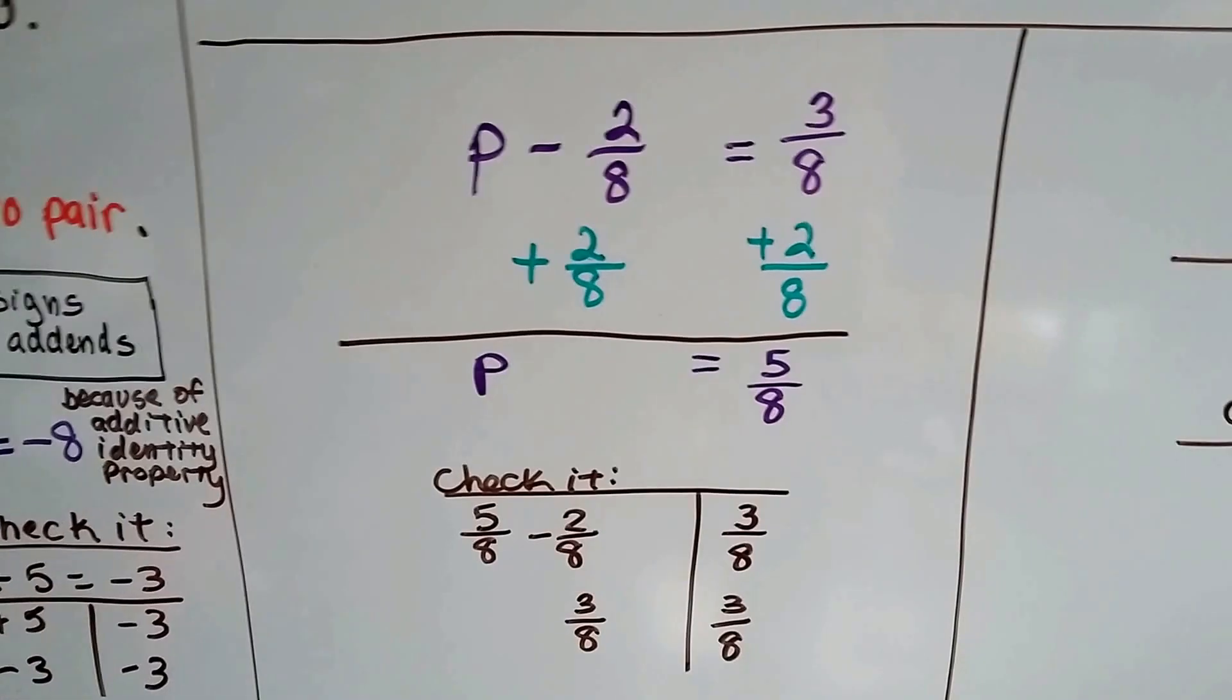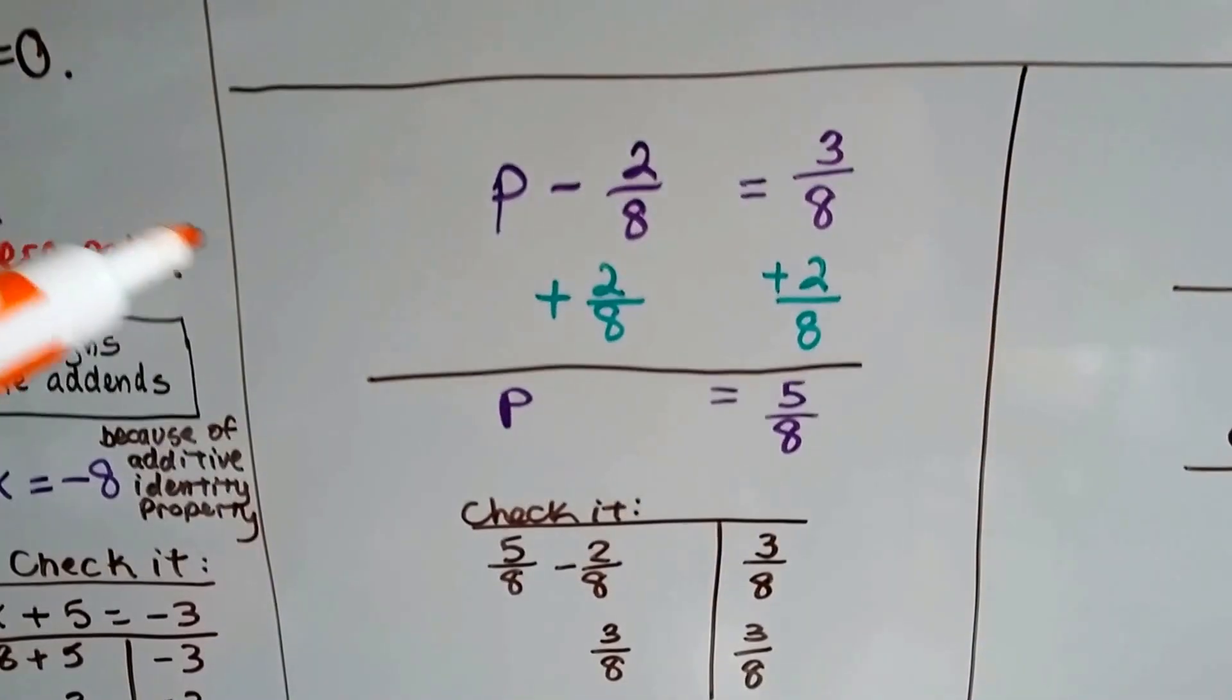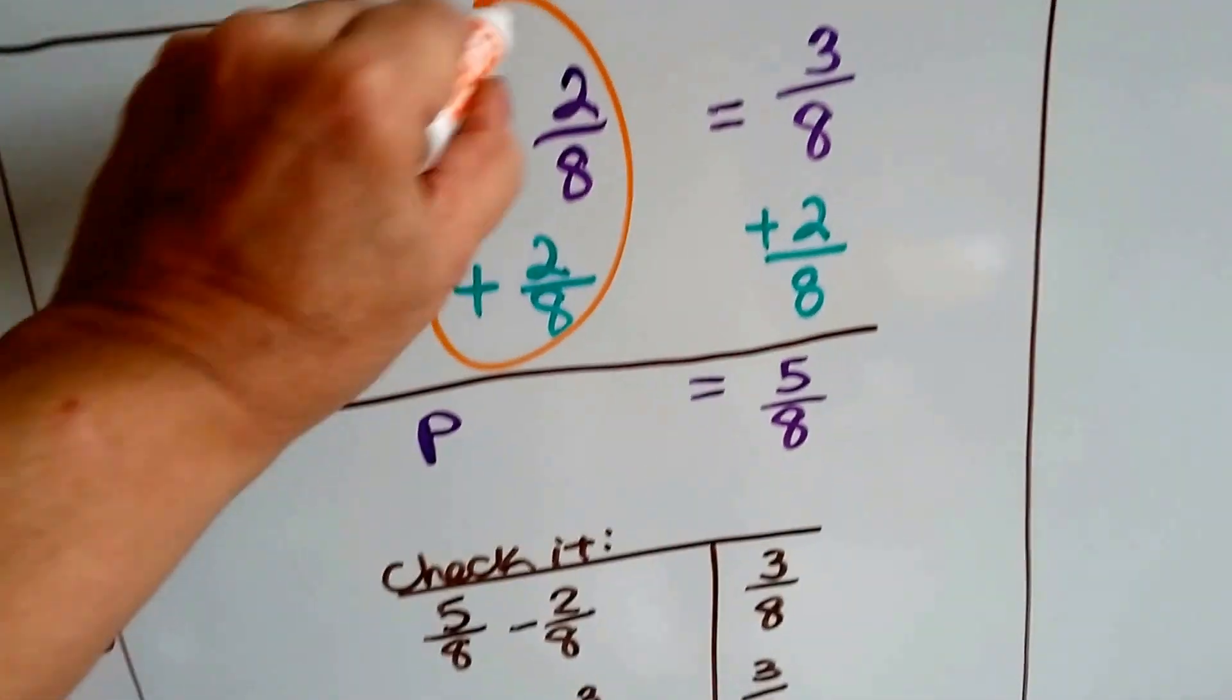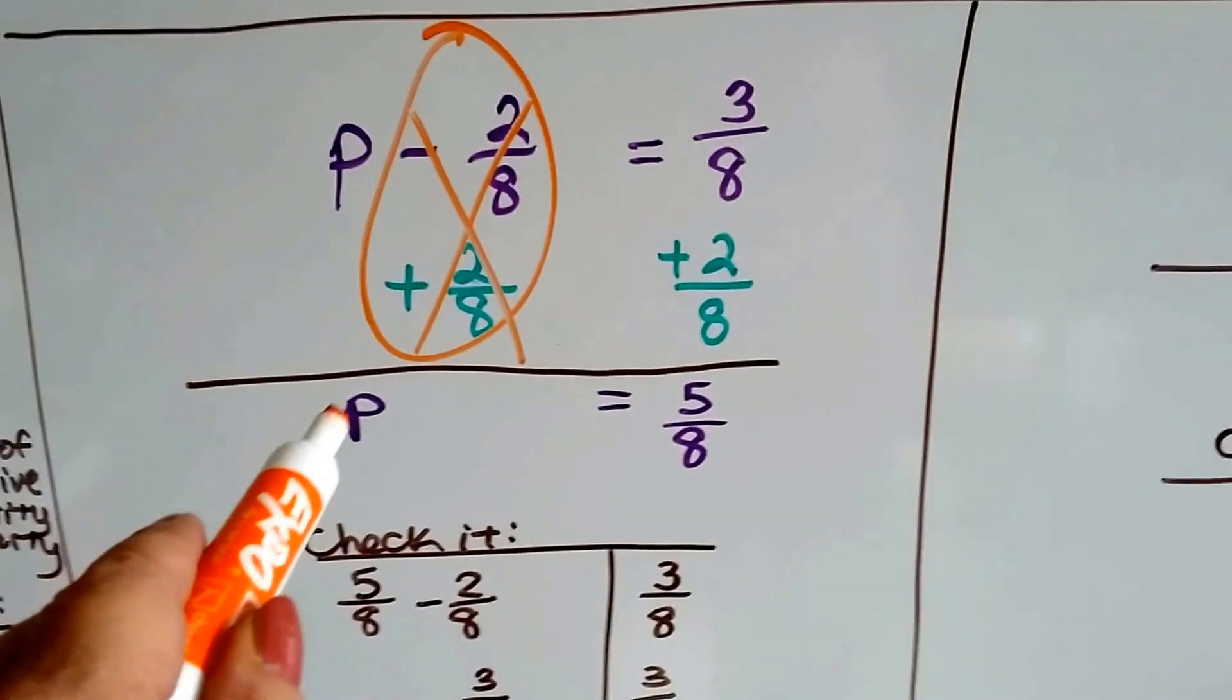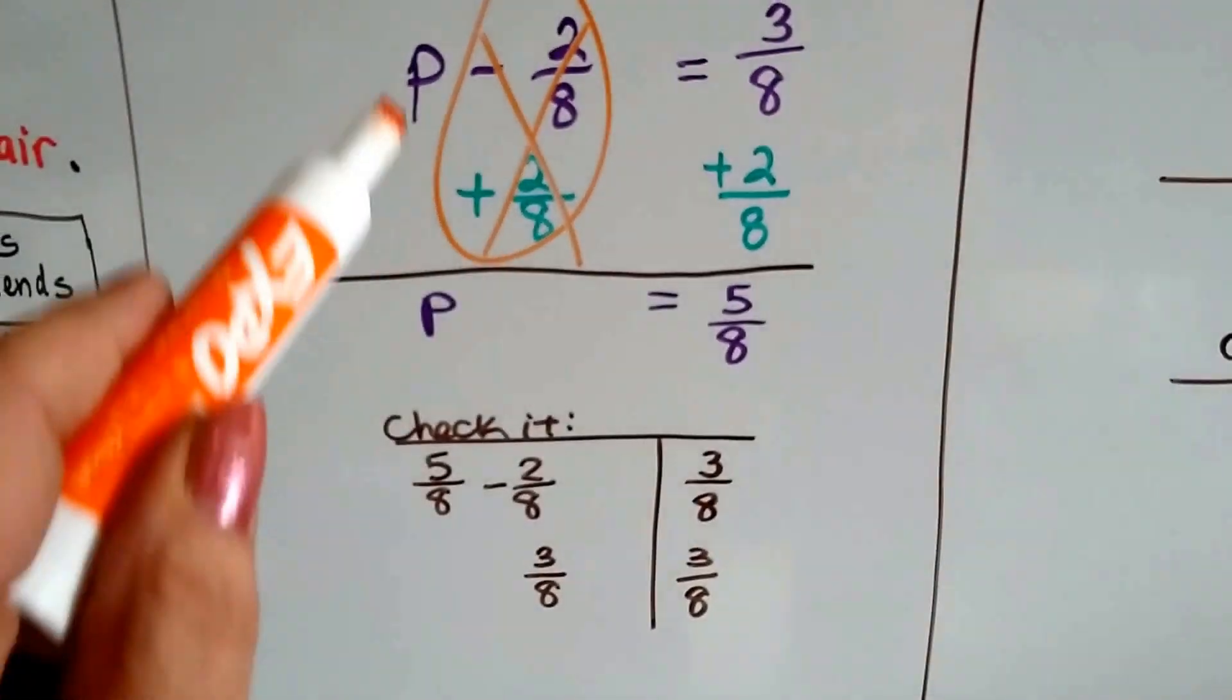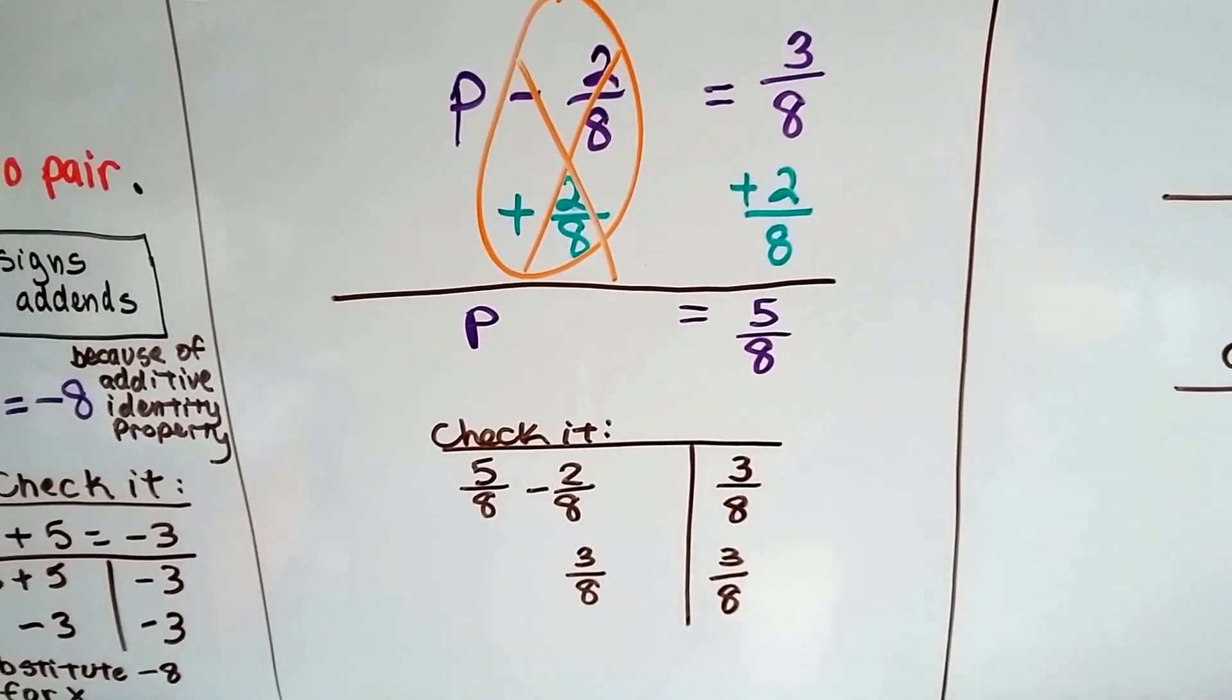So let's see how we can do this quicker. We've got p minus 2 eighths equals 3 eighths. So because this is a minus 2 eighths, we're going to add 2 eighths to both sides. We're going to create a zero pair here, and it's gone. We get rid of it, and all that's left is p equals 5 eighths. And to check it, we plug 5 eighths in for p in the equation, and we see it equals 3 eighths on both sides, and we know we did it correctly.